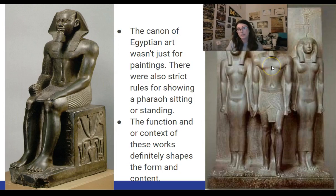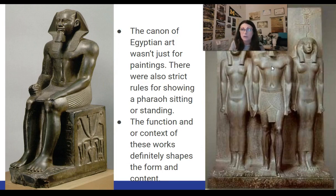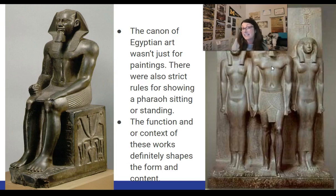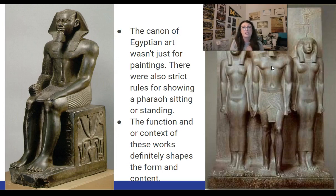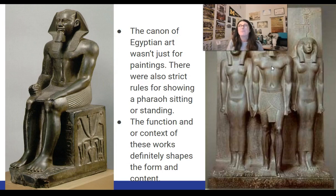Now, that canon of proportions you follow for wall paintings or papyrus drawings also applies to statues. This is even more important because they believed — especially since so many of these were found in tombs — that the soul could come back and go into this statue. So it had better be able to recognize itself and be happy with the body it has, because the body in the statue is the body it would have in the afterlife. If it's missing a hand or an arm, your soul is going to be very irritated and something really bad could happen.